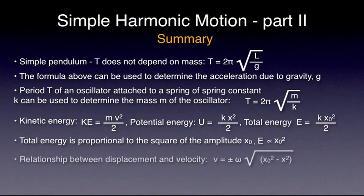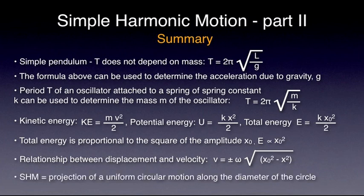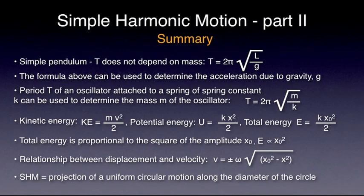The following formula provides a relationship between the velocity V of a harmonic oscillator and its displacement X. The projection on the horizontal or vertical axis of a uniform circular motion is the same as simple harmonic motion. In fact, the uniform circular motion can be seen as two simple harmonic motions operating at right angles.